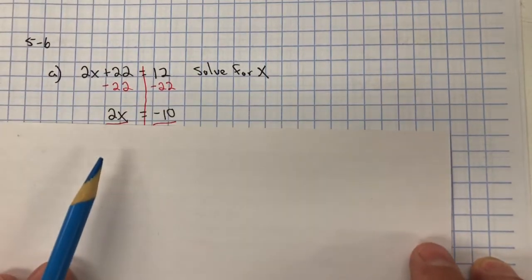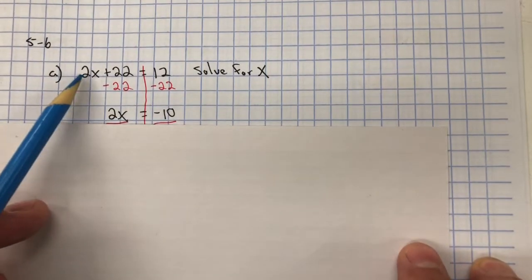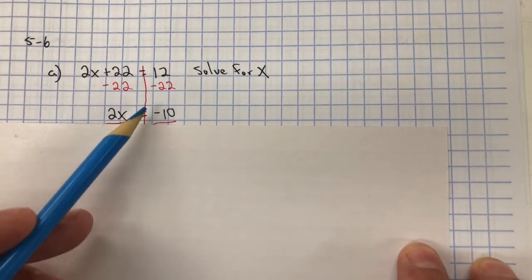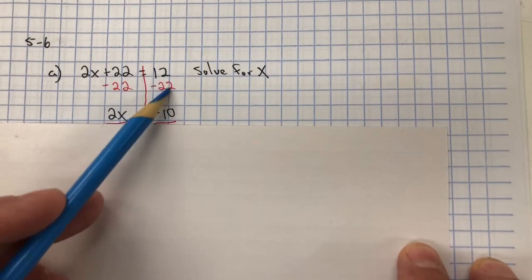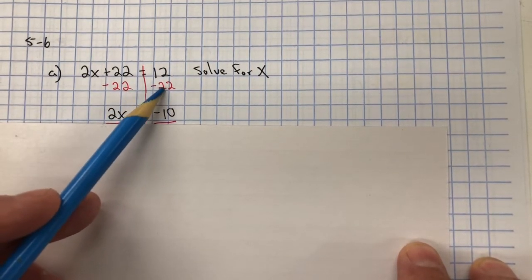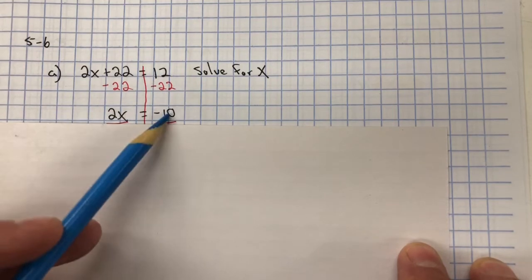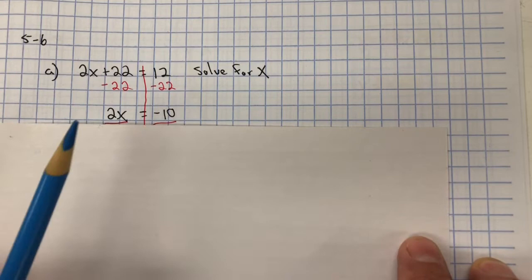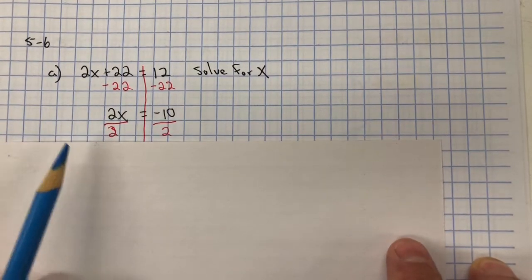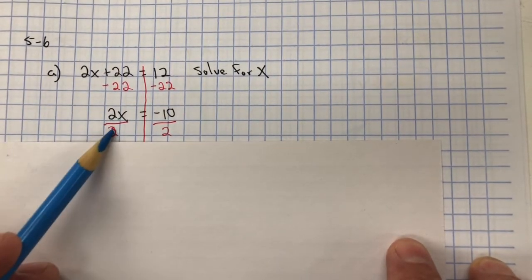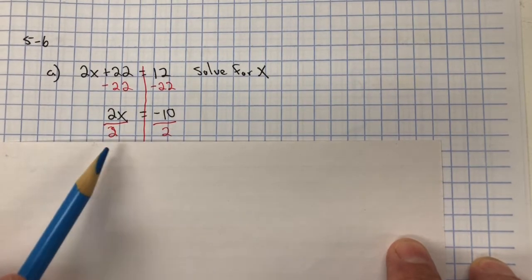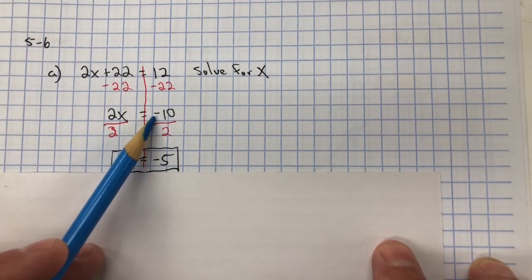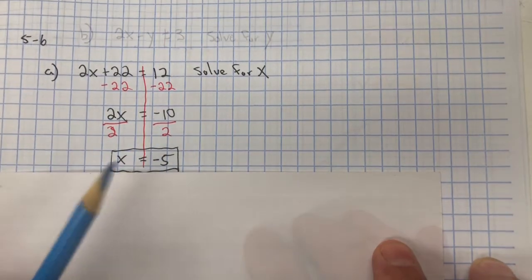This creates a zero pair, and we're left with 2X on the left side. On the right side, we have more negatives than positives, so we know it's going to be a negative. Signs are opposite, so we're going to subtract 22 minus 12 is 10, so it's negative 10. Inverse property of multiplication is division. We divide both sides by 2. This creates the giant one. And we have X equals negative 5, because negative 10 divided by 2 is negative 5.